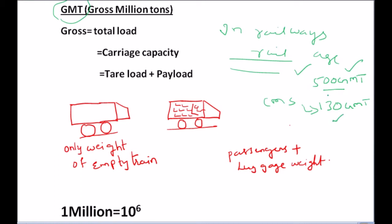Now let us go through what GMT means in detail. GMT means Gross Million Tons. It has three terms: gross, million, and ton. Let us understand each of these terms. The first term is gross. Gross means total load, and total load means carriage capacity.